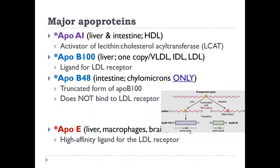ApoB100 and ApoB48 are two apoproteins encoded by the same gene, ApoB, and are produced by a process called RNA editing in different tissues. ApoB100 is synthesized in the liver and is an integral protein for VLDL, IDL, and LDL. Remember that each of these lipoproteins has only one copy of this apoprotein, and LDL has only ApoB100 — there are no other apoproteins on LDL. ApoB100 is a ligand for the LDL receptor. ApoB48, by contrast, is synthesized in the intestine and is present only on chylomicrons; it is a truncated form of ApoB100 and does not bind to the LDL receptor.